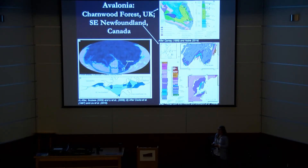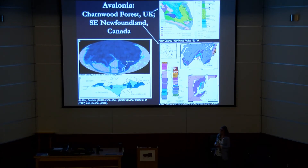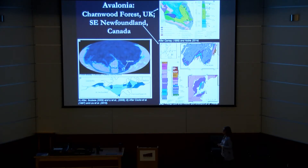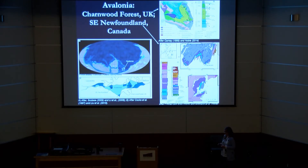My main field areas were Avalonia - the sites that now comprise Charnwood Forest in the UK and south-east Newfoundland. Most of you hopefully have been lucky enough to go down and see Mistaken Point, or if not, are going to see Bonavista. During the Ediacaran, Avalonia was part of a volcanic island arc situated about 60 degrees south, so warm and sunny.